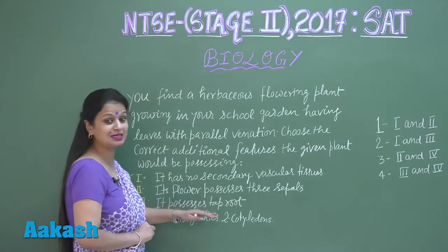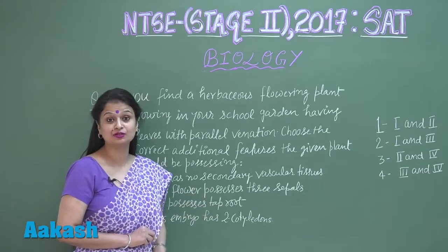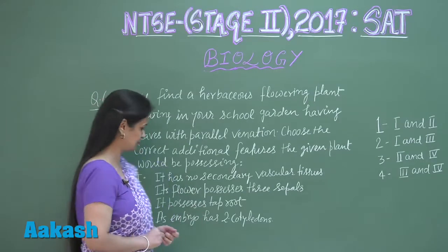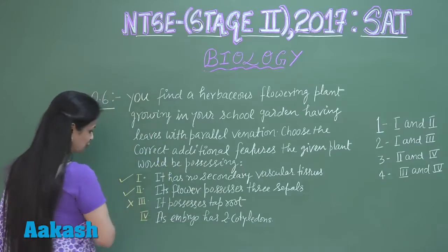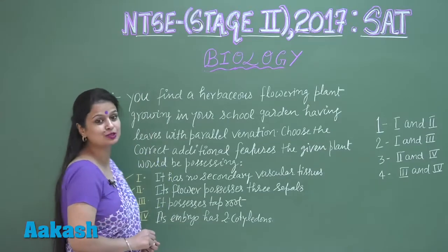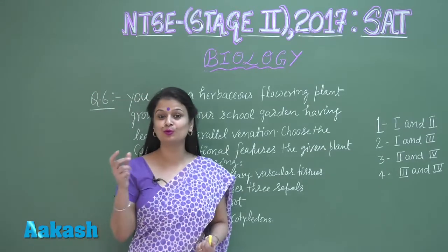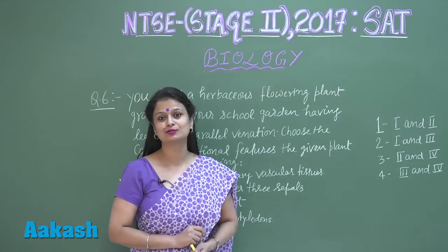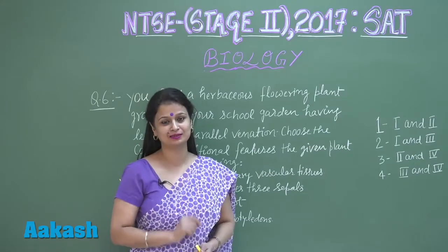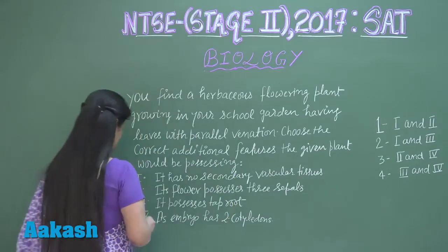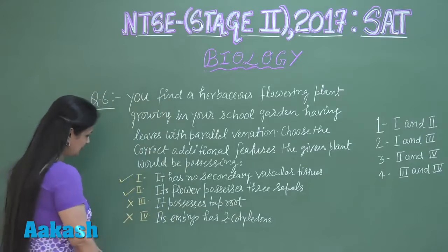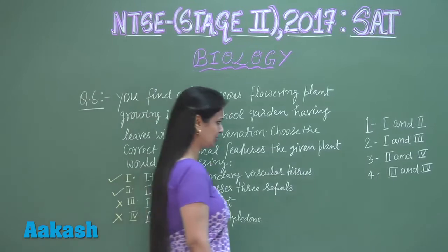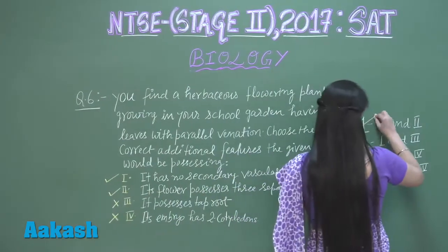The third feature: it possesses a taproot. This is actually a feature of dicots — in monocots there is a fibrous root system, so this is wrong. The fourth feature: its embryo has two cotyledons. No — as the term 'monocot' suggests, there is only one cotyledon, so this is also wrong. That means only statements one and two are associated with monocots.